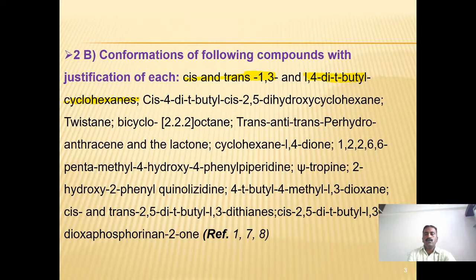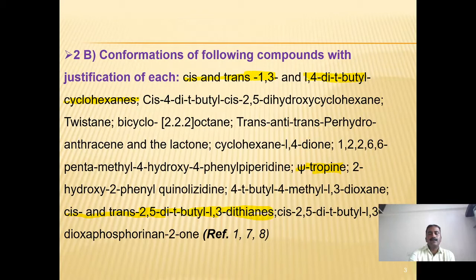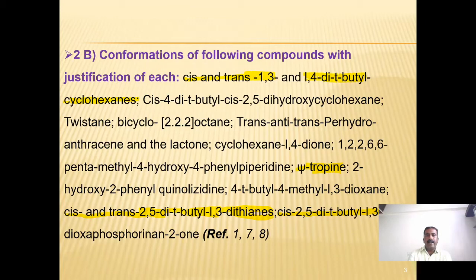Further compounds in Part B include cyclohexane-1,4-dione, 1,2,2,6,6-pentamethyl-4-hydroxy-4-phenylpiperidine, pseudotropin, 2-hydroxy-2-phenylquinolizidine, 4-tert-butyl-4-methyl-1,3-dioxane, cis-trans-2-dimethylbutyl-1,3-dithiane, and cis-2,5-di-tert-butyl-1,3,2-dioxaphosphorinane-2-oxide. References 1, 7, and 8 are to be referred for this part.